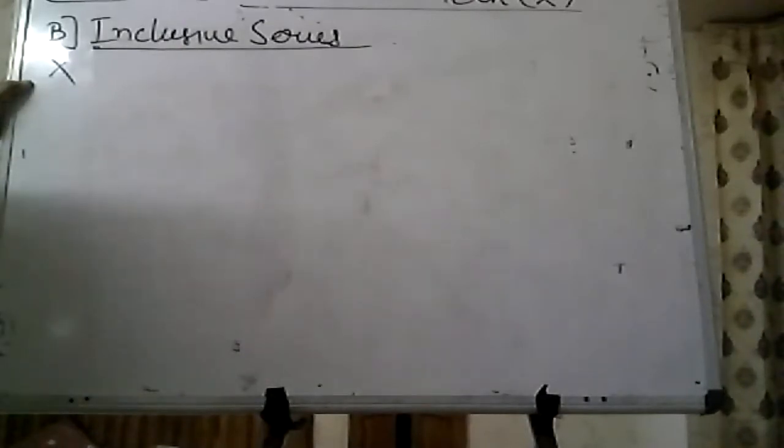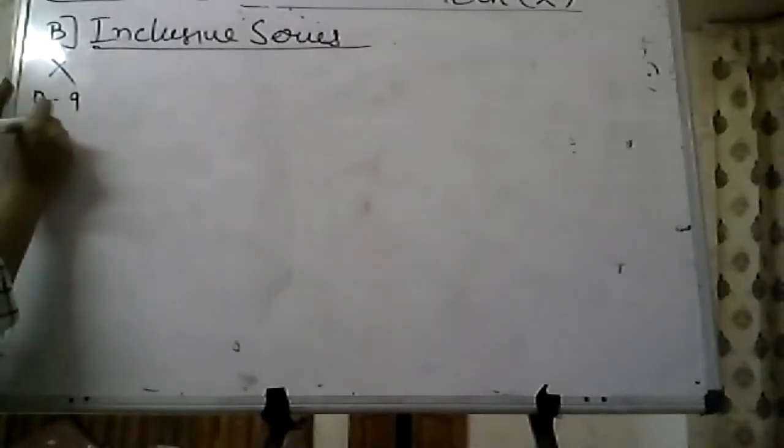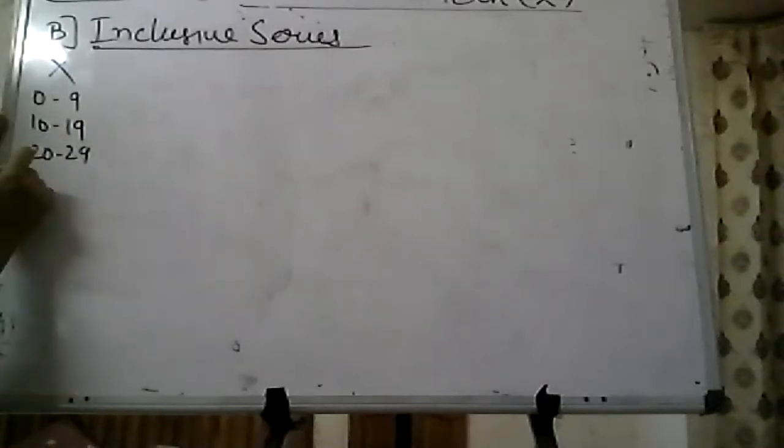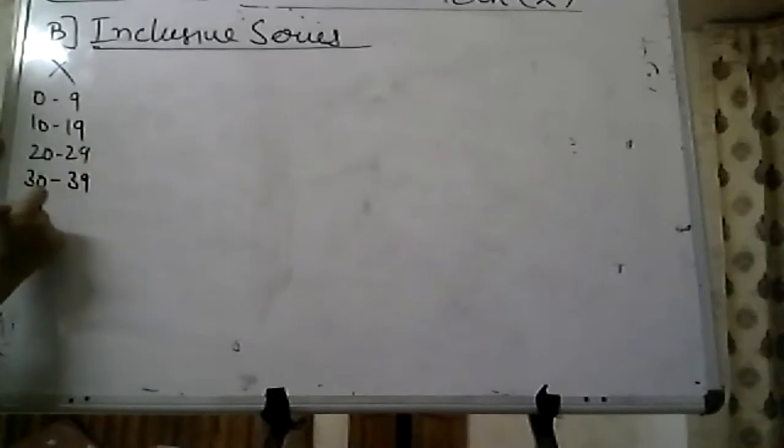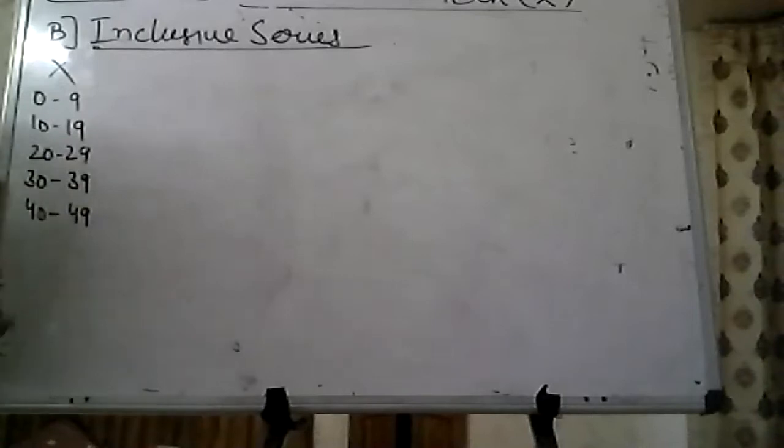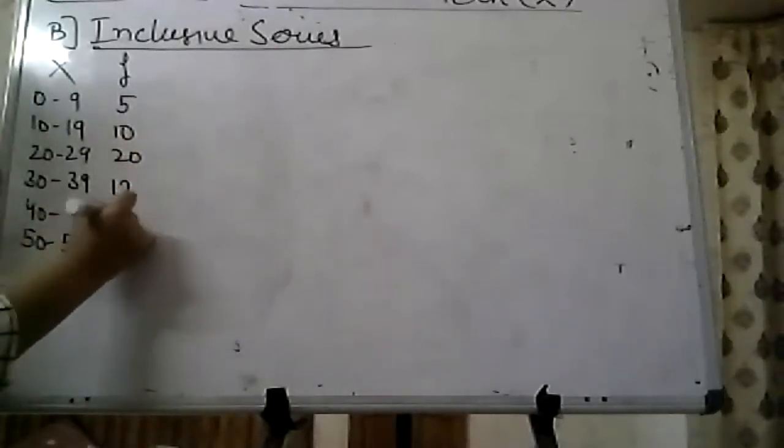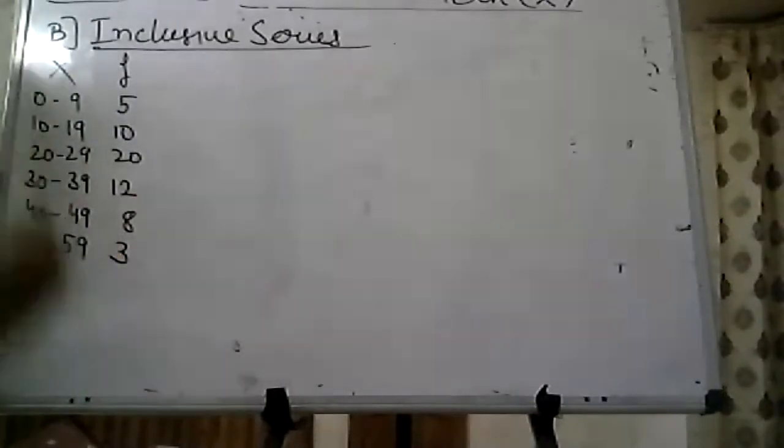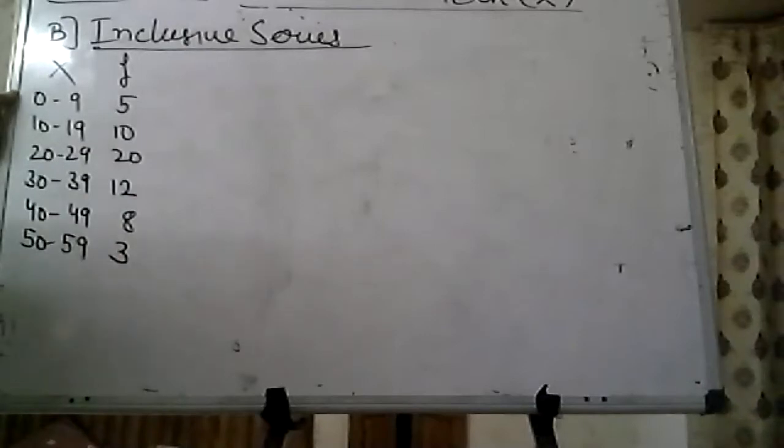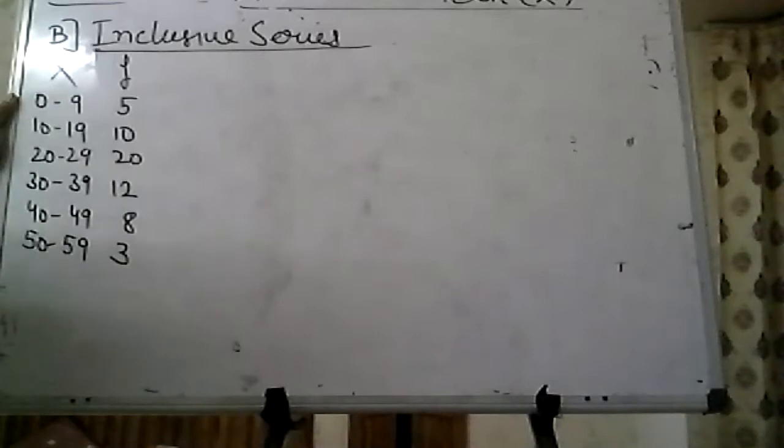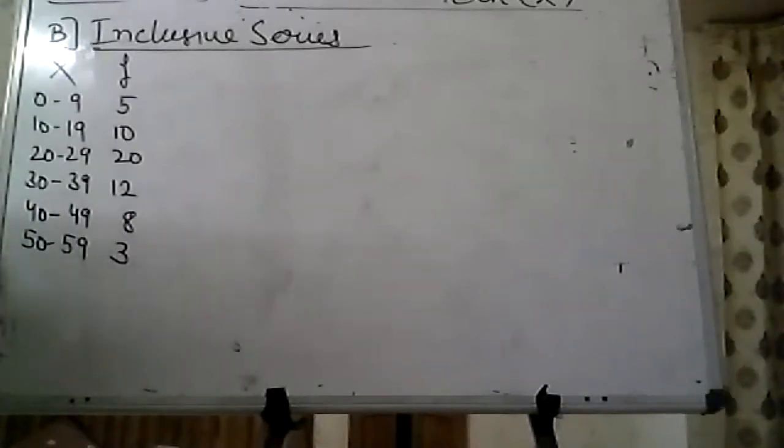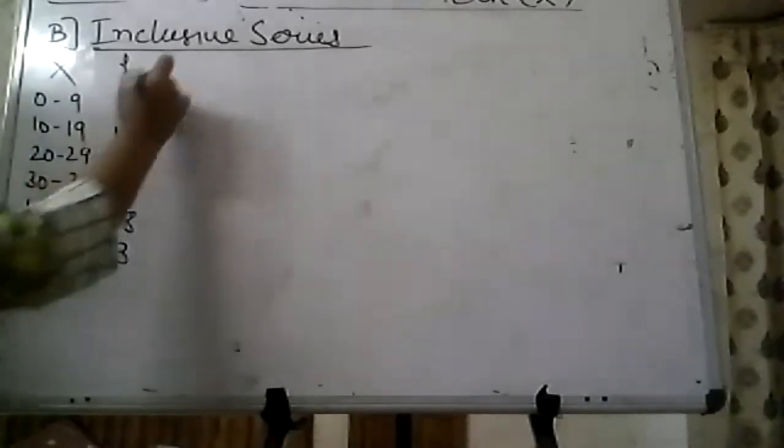Next case is that of inclusive series. Write down the question. You are asked to calculate arithmetic mean. No method is specified, so it's up to us which method we want to make use of. As I told you, it is always advisable in case of continuous series to make use of step deviation method. But as you can see, this is an inclusive series. In case of inclusive series, there is no need to convert it into exclusive series before calculating arithmetic mean.